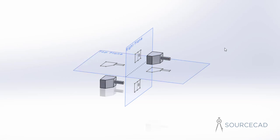If your drawing is placed in the first quadrant, it will be called first angle of projection. If it is in the third quadrant, it will be called third angle of projection.